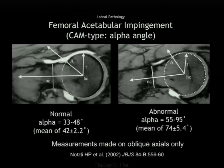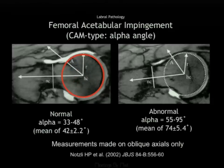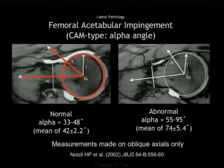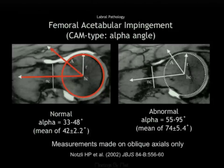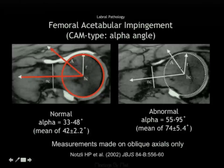On MRI, the common measurement used to assess CAM deformity is the alpha angle. This is done on an oblique axial or radial image by first drawing a circle of the femoral head, finding the center of the femoral head and the axis of the femoral neck, then drawing a line where the femur exceeds the diameter of that circle. The normal alpha angle is 33 to 48 degrees; an abnormal alpha angle in CAM deformity is greater than 55 degrees.